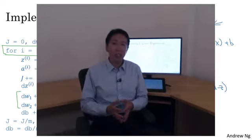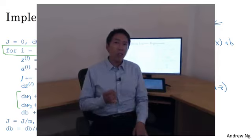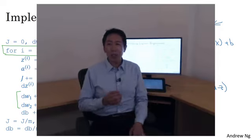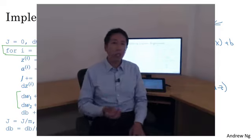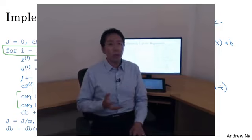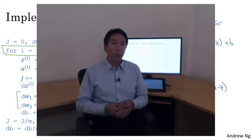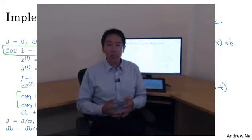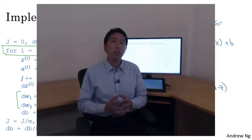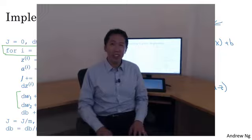So that's it. You now have a highly vectorized and highly efficient implementation of gradient descent for logistic regression. There's just one more detail that I want to talk about in the next video, which is in our description here. I briefly alluded to this technique called broadcasting. Broadcasting turns out to be a technique that Python and NumPy allows you to use to make certain parts of your code also much more efficient. So let's see some more details of broadcasting in the next video.